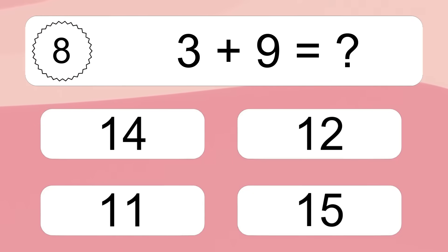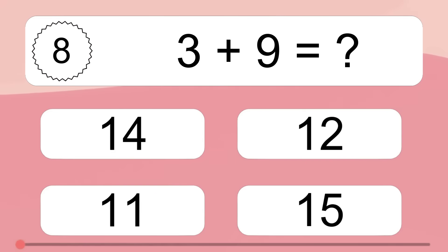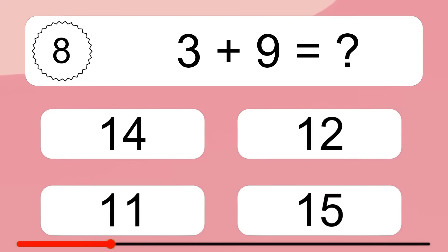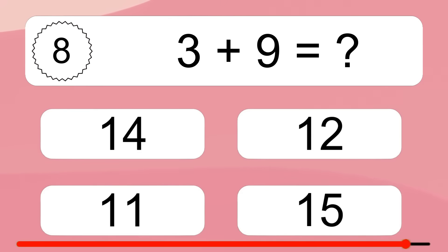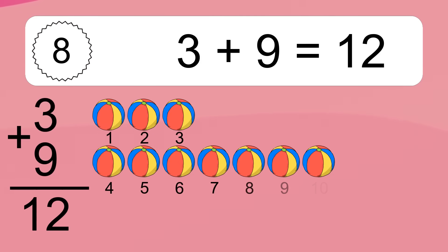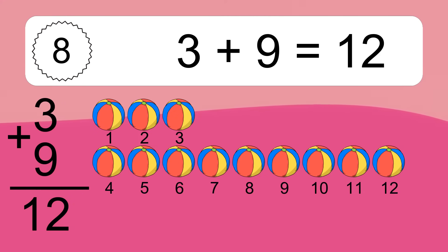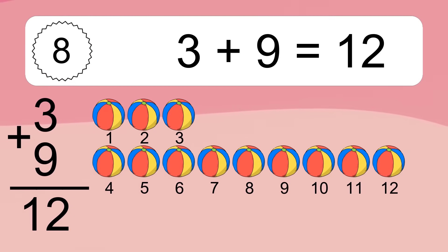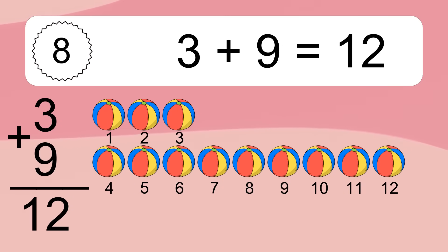Let's count it. 1, 2, 3, 4, 5, 6, 7, 8, 9, 10. 3 plus 9 equals 12. Let's count it. 1, 2, 3, 4, 5, 6, 7, 8, 9, 10, 11, 12.